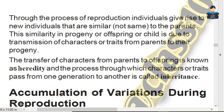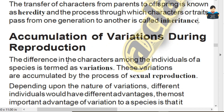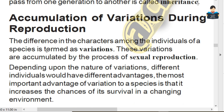So, heredity. The difference in characters among the individuals of a species is termed as variation. Characters are transmitted from parents to their children. These differences, varieties, and proportions are accumulated by the process of sexual reproduction.